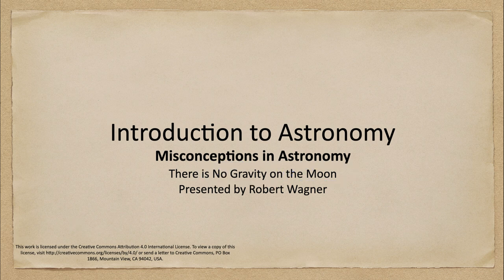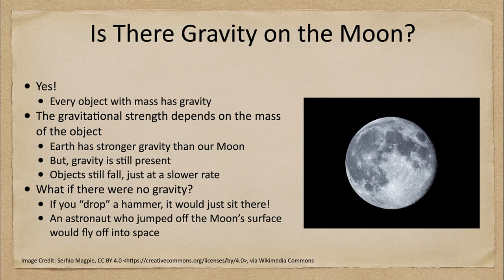So is there gravity on the Moon? Well, the quick answer, of course, is yes, because every single object with mass in the universe has gravity. It is a universal property of everything in the universe. So an individual person has gravity, and any object in space, whether large or small, has gravity. So it's sometimes a misconception that there is no gravity on the Moon.